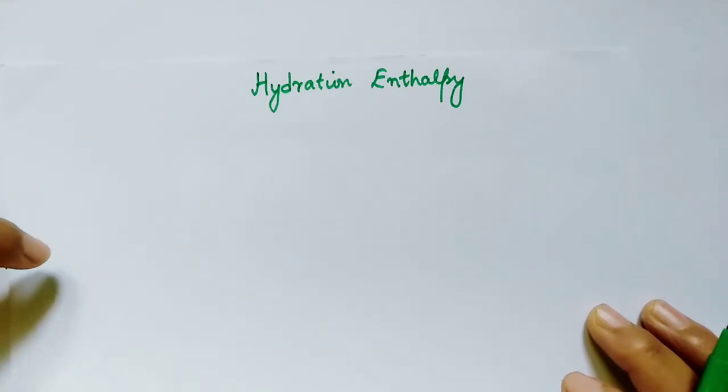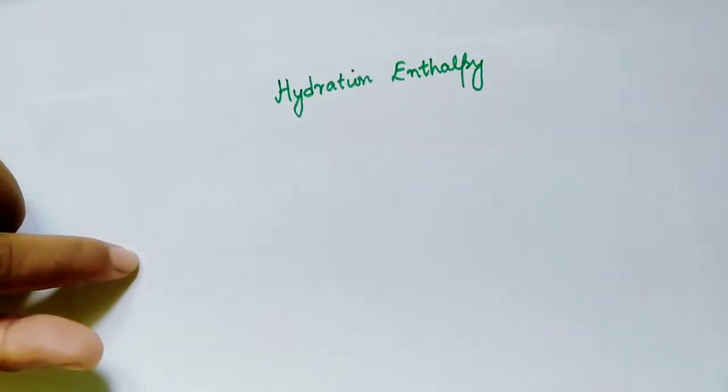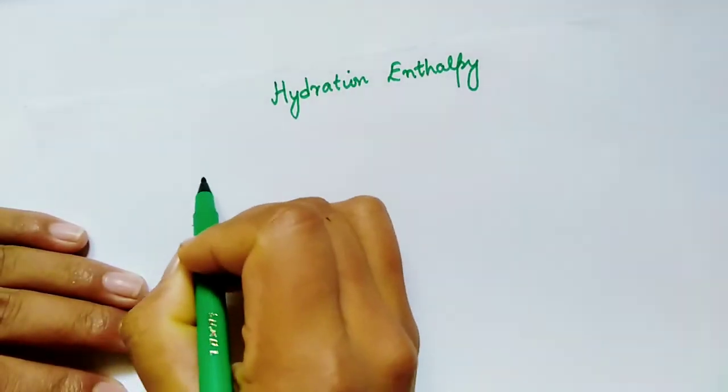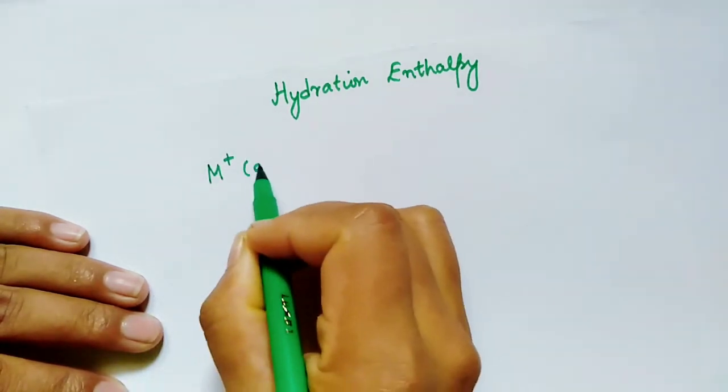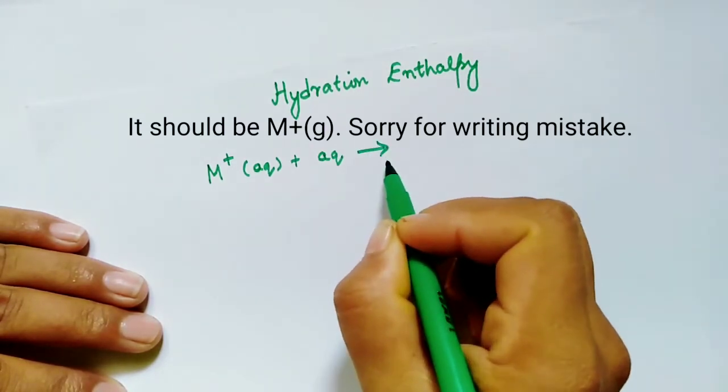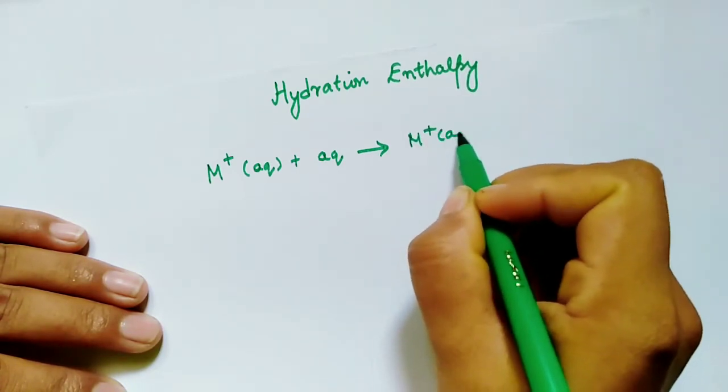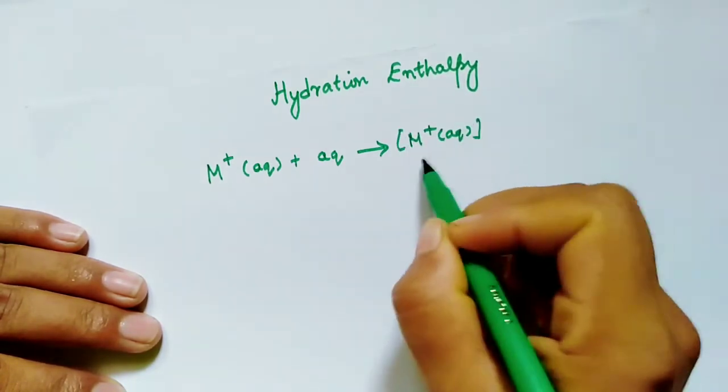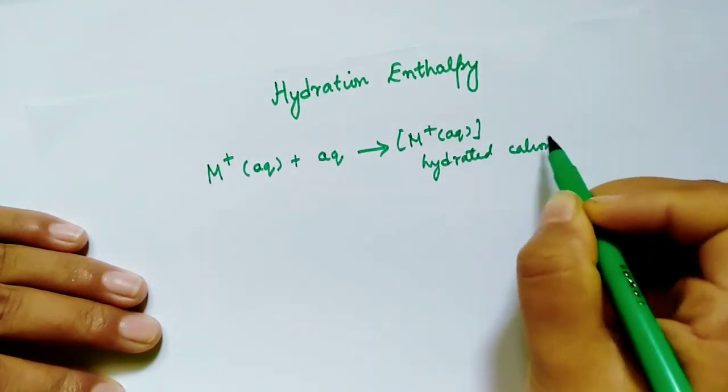Let's see what happens to the hydration enthalpy as we move from lithium+ to cesium+. First, consider an alkali metal ion. When this ion is hydrated, you will get a hydrated cation.